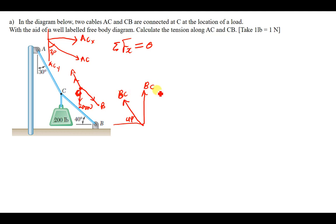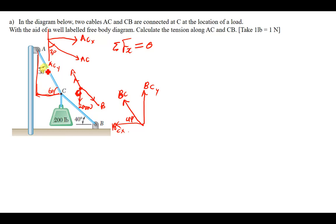The summation of forces in x is supposed to add up to zero. At this joint in the x we have the x-component of AC. Drawing a triangle: if this angle is 30, then the other angle is 60, because the angles in a triangle add up to 180 — so if this is 90, this is 30, this should be 60.